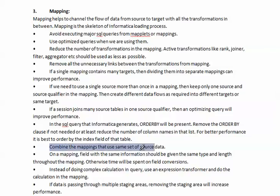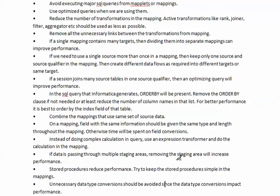Combine mappings that use the same set of data flow. Mapping fields with the same information should be given the same data type and length; otherwise, time will be spent on field conversion. The data type should be the same throughout the mapping. Instead of doing complex calculations in the query, use expression transformation and do the calculation in the mapping. Do not use functions in the query — rather, use expression transformation in the mapping. It will improve performance.